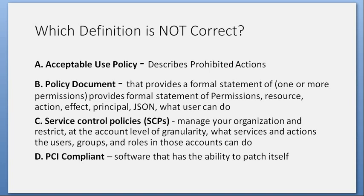Which definition is not correct? A. Acceptable use policy describes prohibited actions. B. Policy document that provides a formal statement of one or more permissions — resource, action, effects, principals, JSON — what a user can do. C. Service control policies — manage your organization and restrict at the account level what services and actions the users, groups, and roles in those accounts can do. D. PCI compliance — software that has the ability to patch itself. Answer: D. I actually just made that one up. PCI compliance is a payment card industry data security standard.